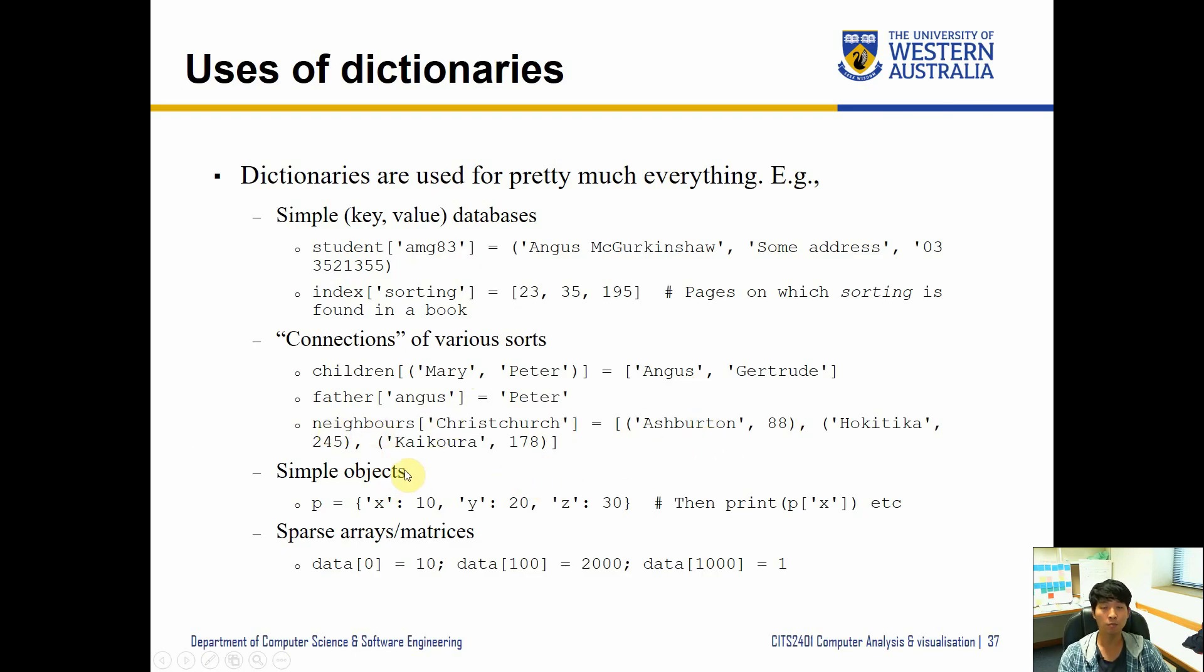Simple objects like points can also be put into the dictionary. So P of point X 10, Y 20, Z 30. Then you can easily look up point of X, it's going to show us P 10, etc. However, for something like this three-dimensional thing, it's probably better to create objects called points instead of this. However, doing some object-oriented isn't really covered in this unit, so you don't have to worry about it. And lastly, sparse arrays and matrices can also be stored using dictionaries. So for example, data 10 equals 10, data 100 equals 2000, and so forth. So those are all potential use of dictionaries in the context in practice.